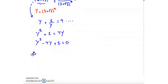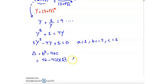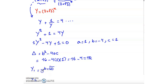To solve it we need to find delta = b² − 4ac, where a = 1, b = −4, and c = 1. So delta = (−4)² − 4(1)(1) = 16 − 4 = 12. The solutions are y₁ = (−b + √delta) / 2a and y₂ = (−b − √delta) / 2a.